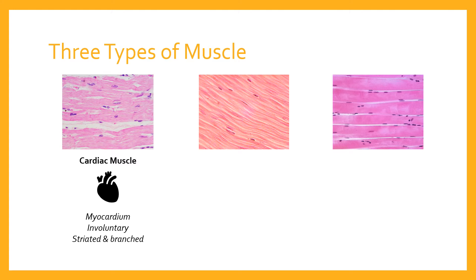A particularly essential feature of cardiac muscle is that it is non-fatiguing — it doesn't get tired. That's obviously very important because you don't want your heart to give up; you want it to continue to beat without you having to think about it. So cardiac muscle is involuntary, striated and branched in appearance, and it doesn't fatigue — it just continues to beat under its own steam.